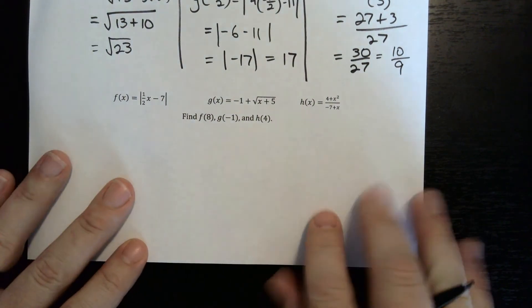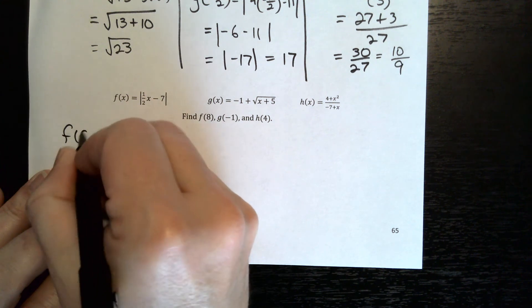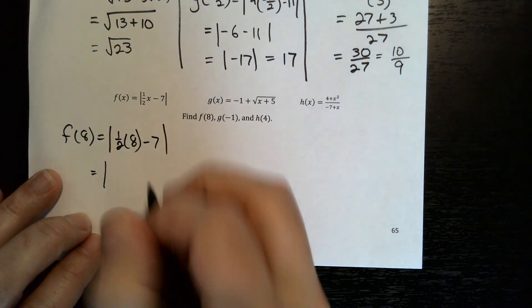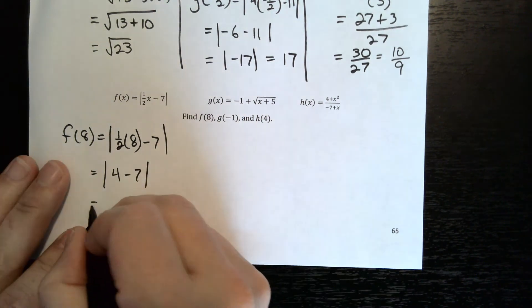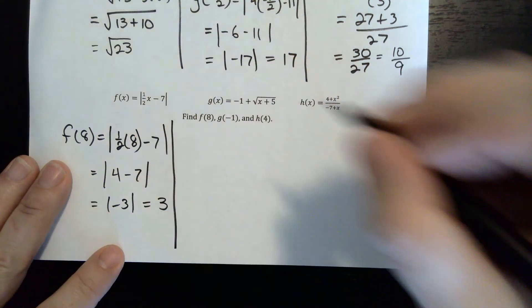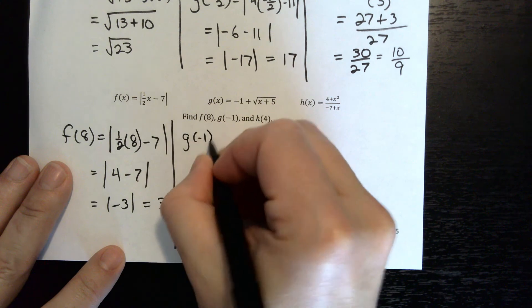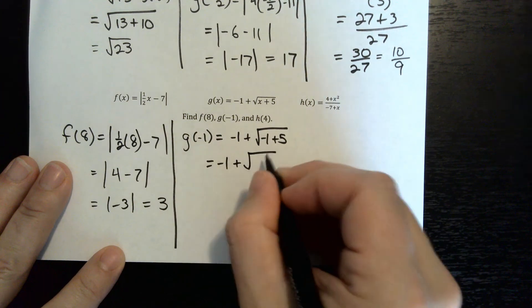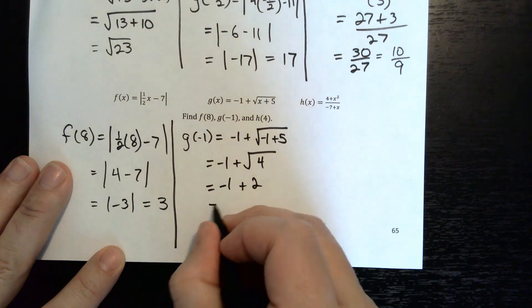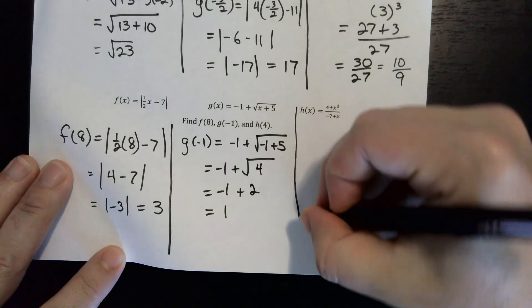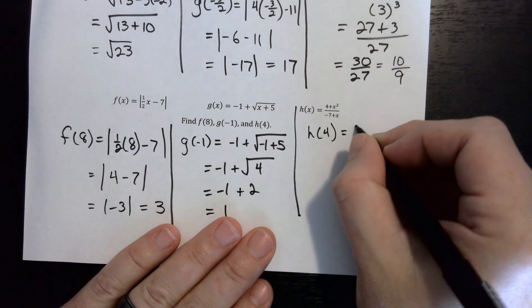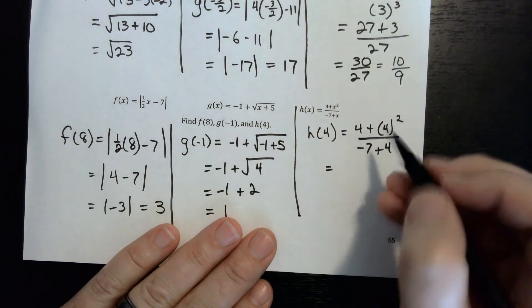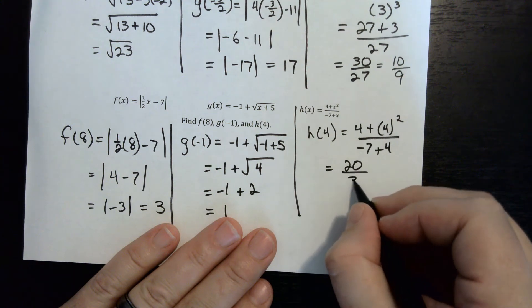For f of 8 with f of x equals the absolute value of one-half x minus 7: that's the absolute value of 4 minus 7, which is the absolute value of negative 3, which equals 3. For g of negative 1 with g of x equals x plus the square root of x plus 5: that's negative 1 plus the square root of 4, which is negative 1 plus 2, equals 1. For h of 4 with h of x equals x plus x squared over negative 7 plus x: that's 4 plus 16 over negative 3, which is 20 over negative 3, or negative 20 over 3.